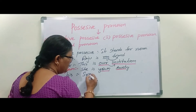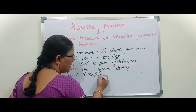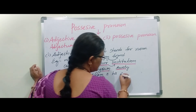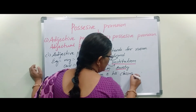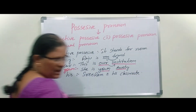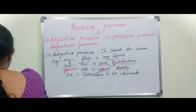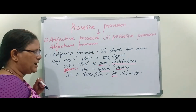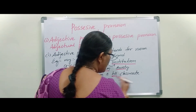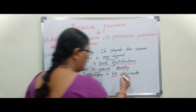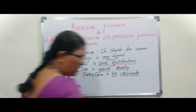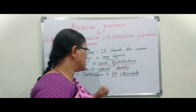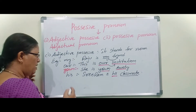Sriram is his classmate. Here, 'his' is a possessive pronoun because it is talking about 'classmate.' Classmate is a common noun — it is talking about a noun. That's why this comes under Adjectual Pronoun.